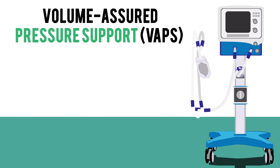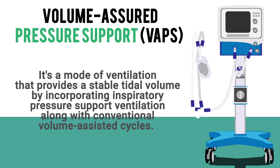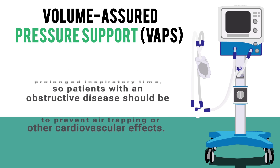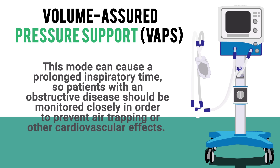Next we have VAPS, or volume assured pressure support. This is a mode of ventilation that provides a stable tidal volume by incorporating inspiratory pressure support ventilation along with conventional volume-assisted cycles. This mode is only available on certain ventilators. One thing to note is that it causes prolonged inspiratory time, so patients with obstructive disease should be monitored closely to prevent air trapping or other cardiovascular effects.